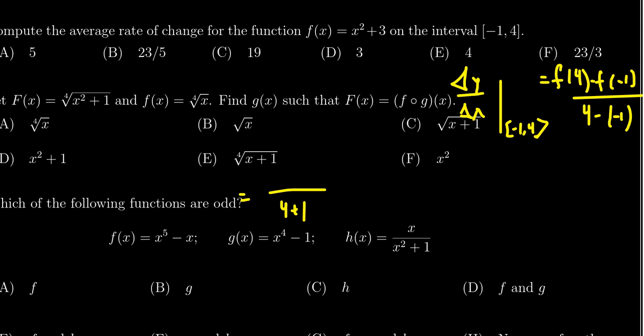We need to evaluate f at 4 and -1. Plugging these in, we get 4² + 3 minus [(-1)² + 3]. Be cautious with your parentheses.